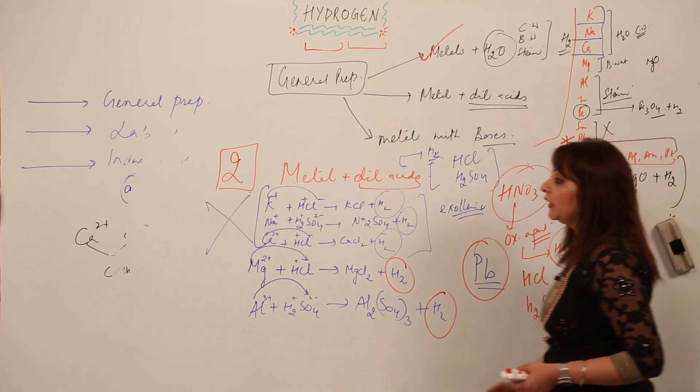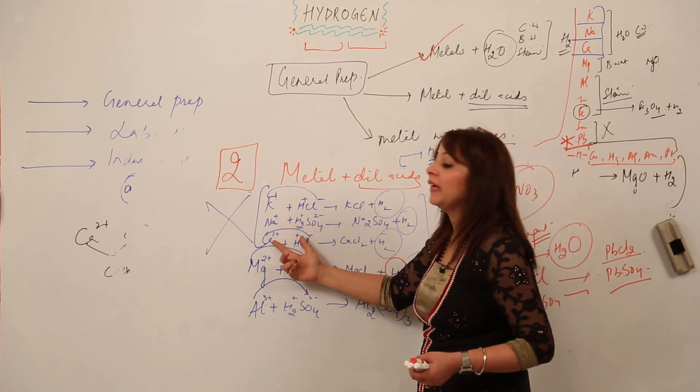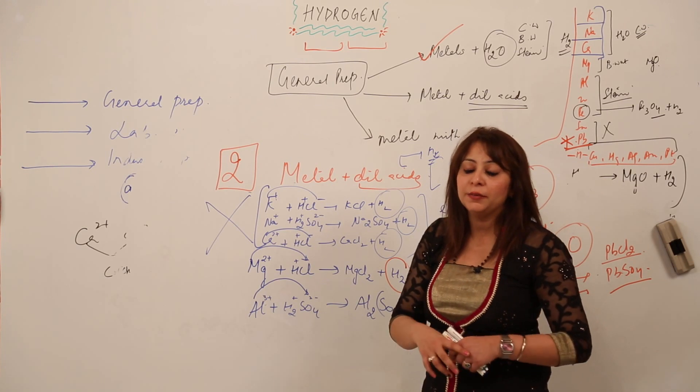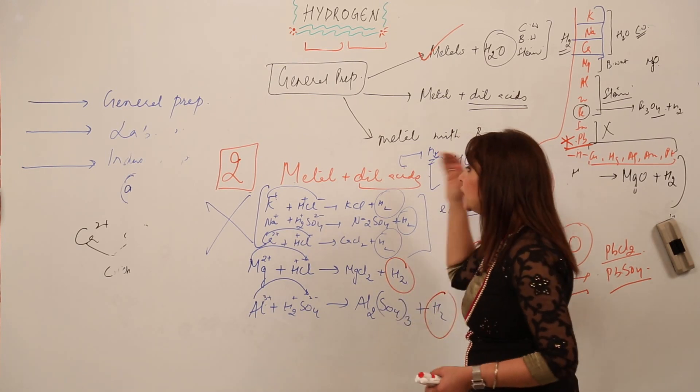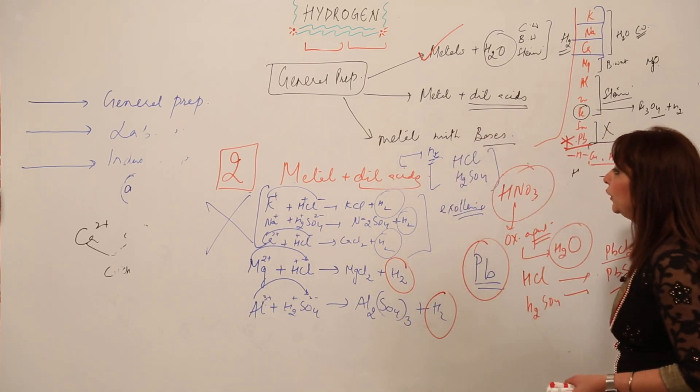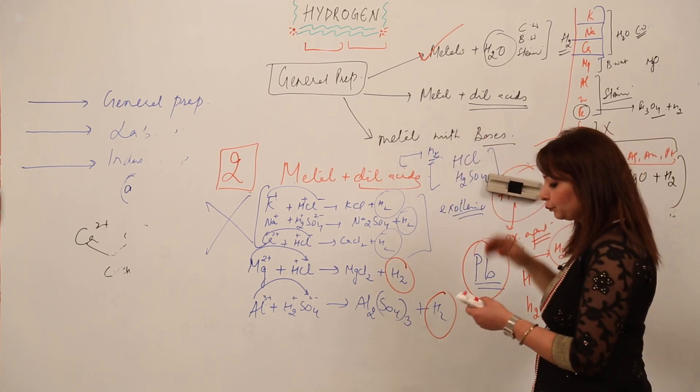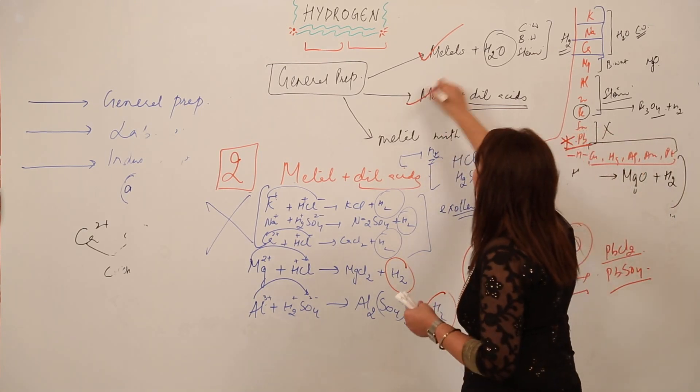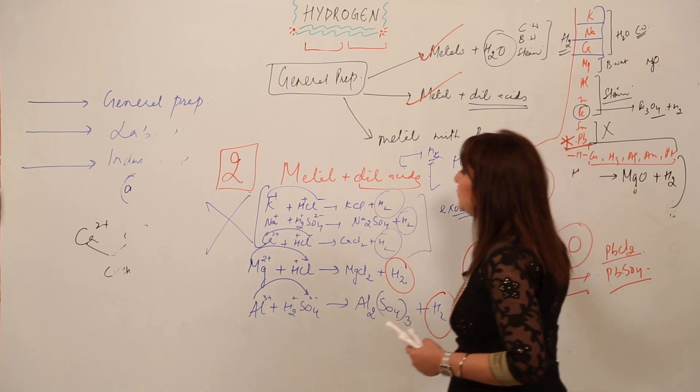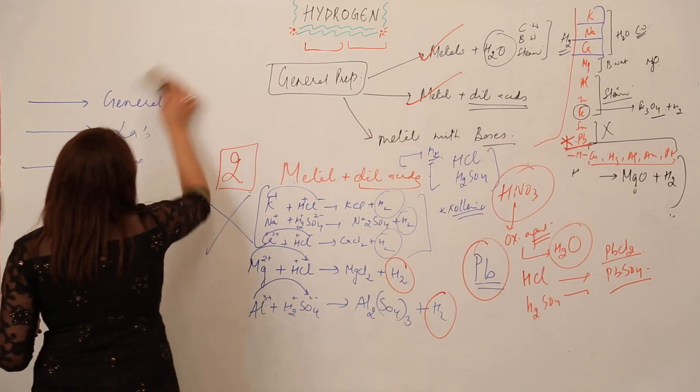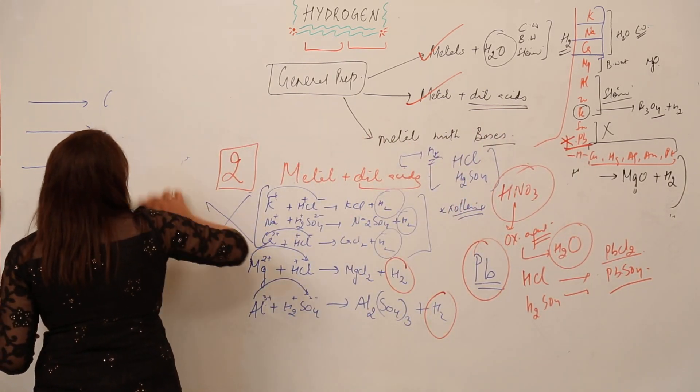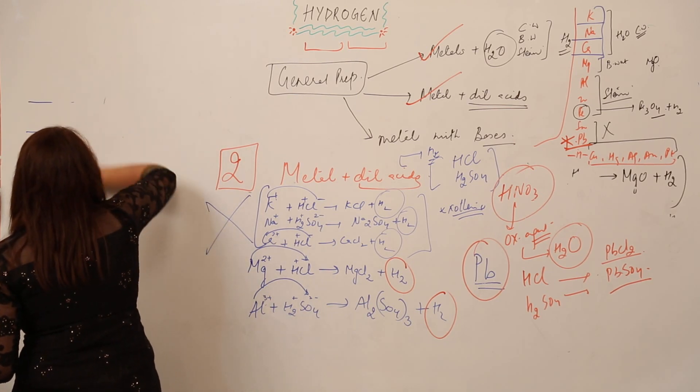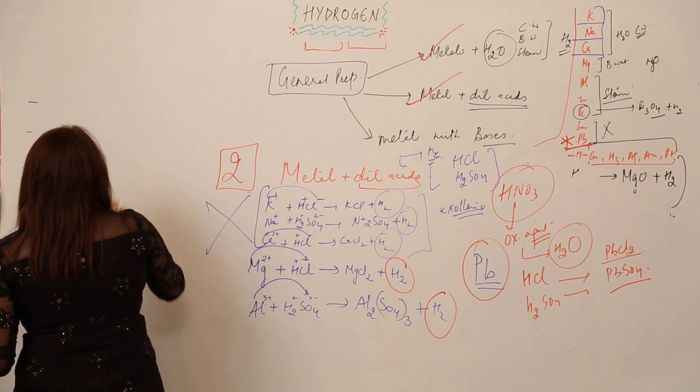We cannot use potassium, sodium, or calcium as well, the reason being the reaction will lead to an explosion. This is the second method, the reaction of metal with dilute acid. The third method is easy because you're already familiar with the first two methods.